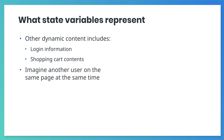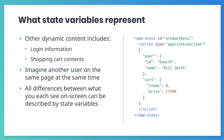Now imagine another user is using the same page at the same time that you are. They'll have different things in the shopping cart and will probably have chosen different product options. The user's information will be stored on a server, but also in users' browsers in state variables. This is how the same site can look different for different users at the same time.